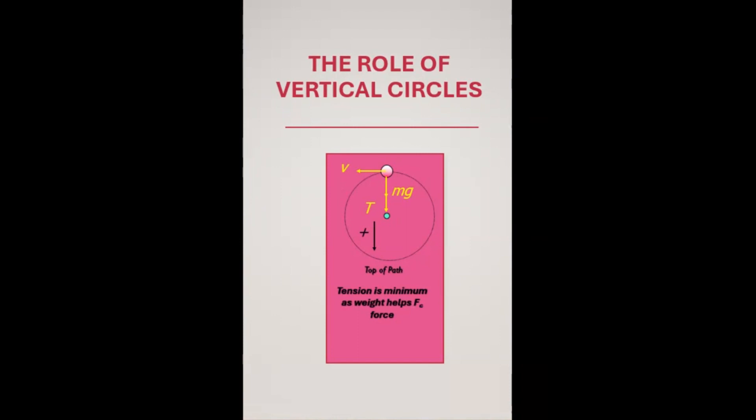If coasters were built with perfectly circular loops, there would be quite a few problems. First is the gravitational force equivalent which is commonly called as the g-force. In perfectly circular loops, the g-force that a human body could experience at the bottom of the loop is very unsafe.